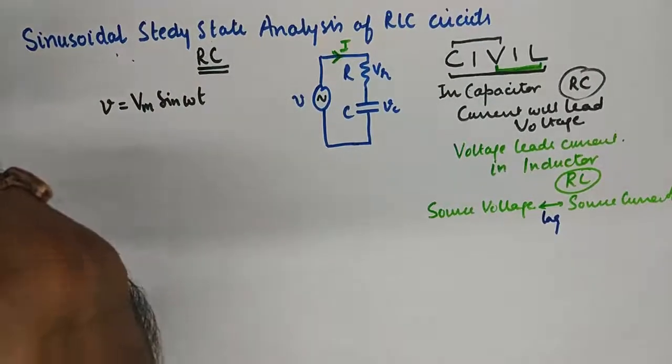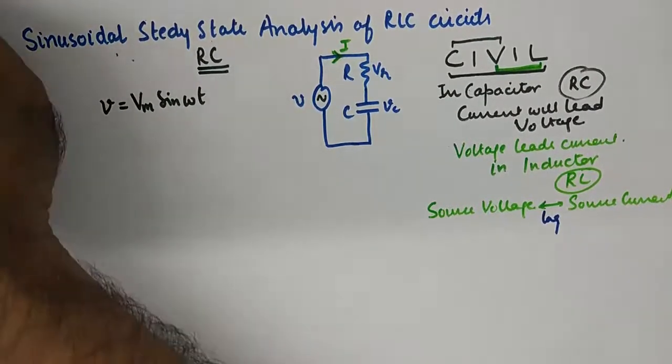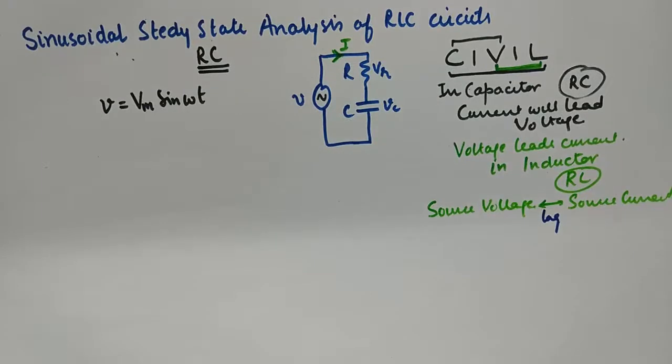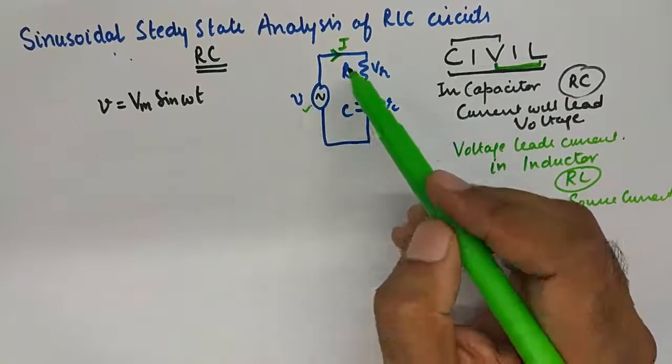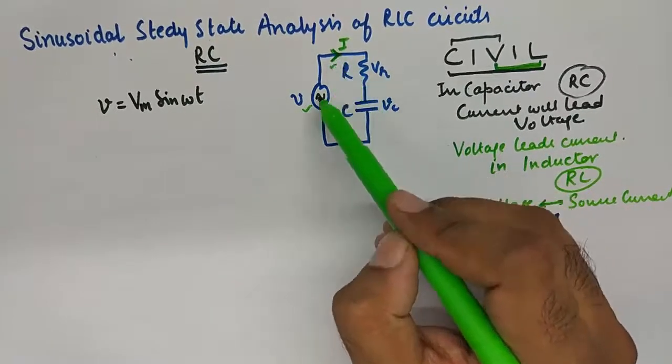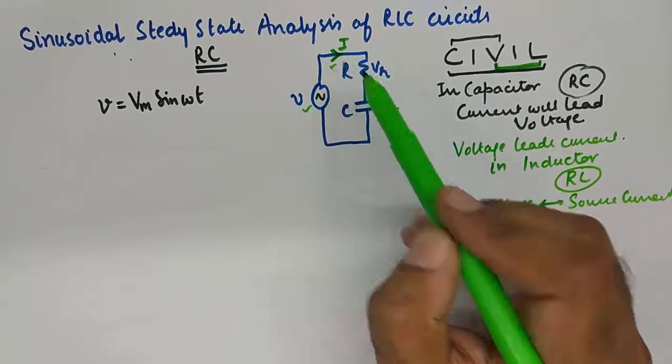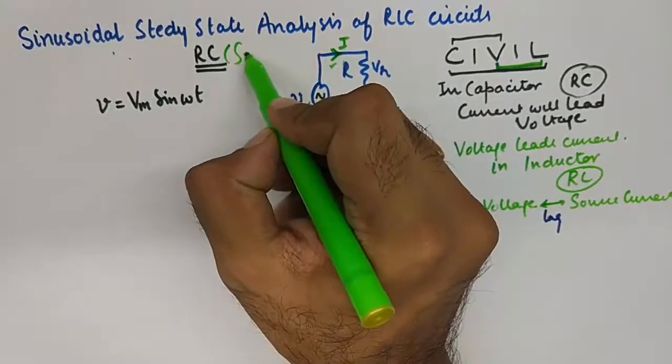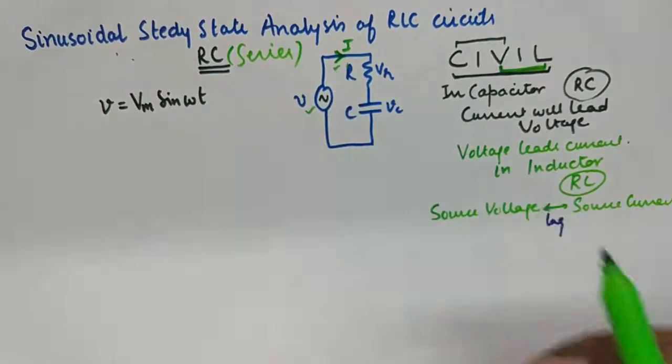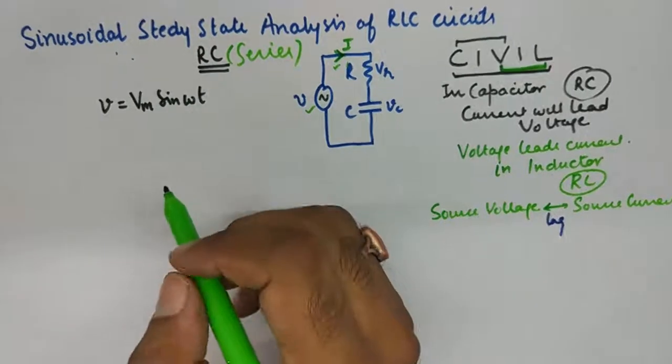So just to make the thing super easy, we are putting it in very simple terms that our source voltage here will lag in phase from the source current, which is the only current by the way present in the circuit. Because we are talking about the series RC circuit.